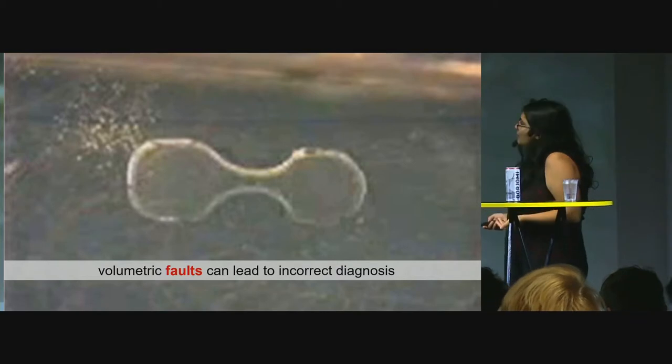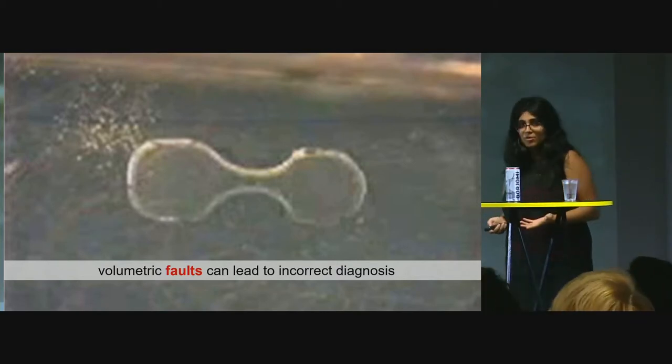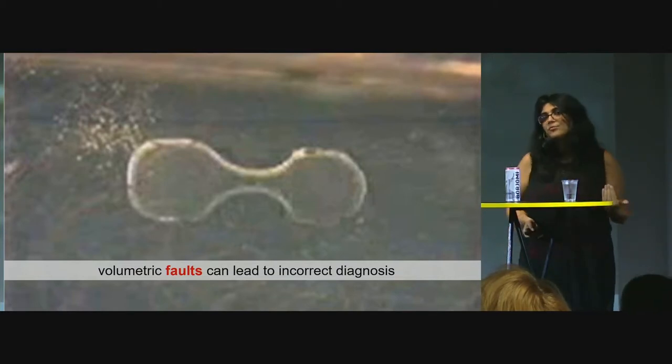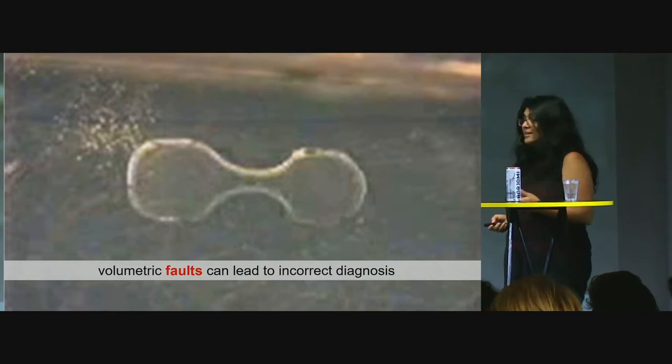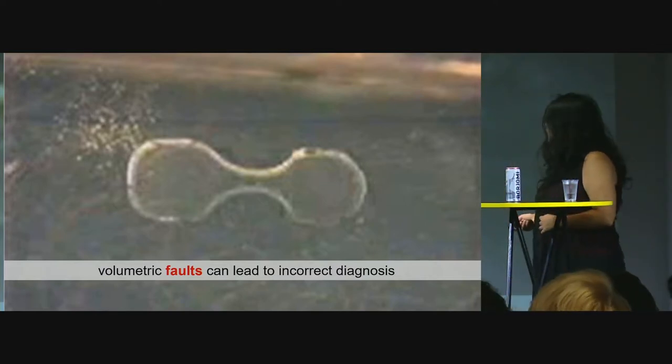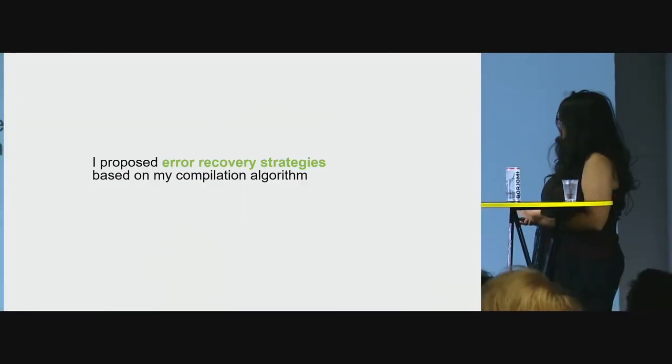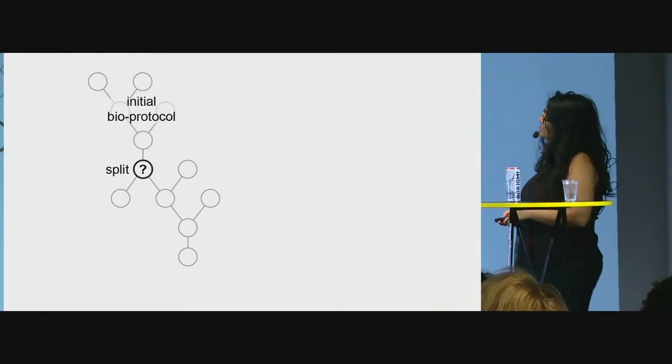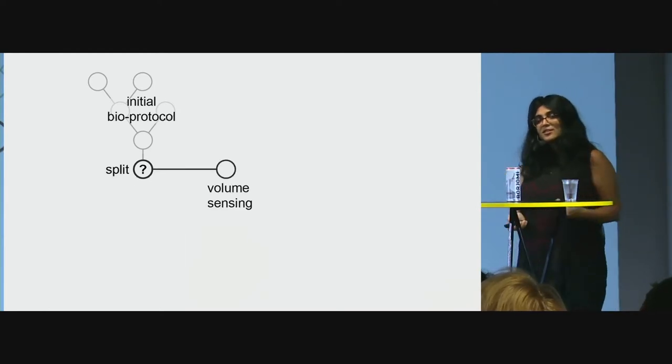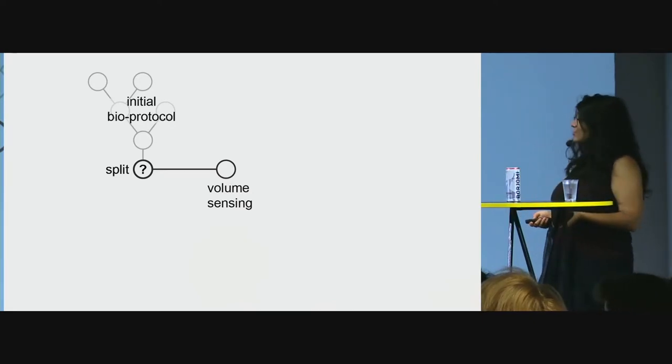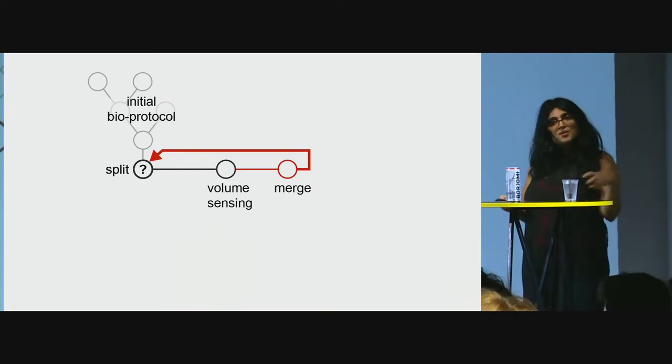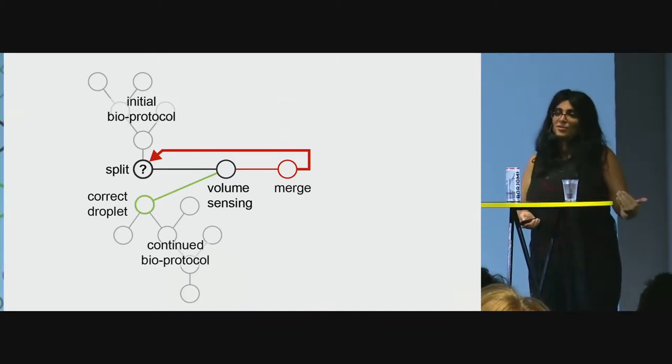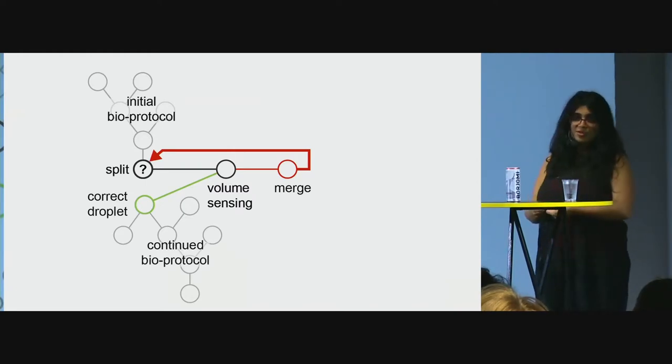So one of the most common fault reasons is the split operation. What you see here is a split that results in two unequal daughter droplets. And unequal volumes lead to unequal concentrations and eventually lead to incorrect results. So you want to solve it as soon as possible. I propose error recovery strategies that are based on my fast compilation. So looking at the split operation, whenever I have a split operation in my graph, I adjust the graph and I insert a sensing operation that takes the droplet to a sensor to check the volume. In case I have an error, I merge the droplet again and then I split them again. And if I don't have an error, I just continue. It's pretty much like restarting your computer. So if we have a split that's erroneous, we just merge them again and we split them again.